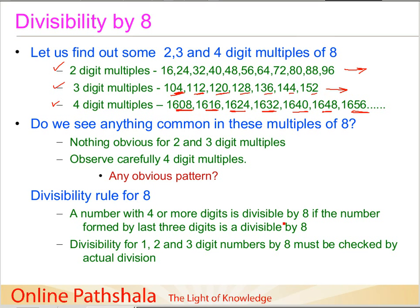This brings us to the divisibility rule for 8: a number with four or more digits is divisible by 8 if the number formed by its last three digits is divisible by 8. For one-, two-, or three-digit numbers, we must perform actual division and check that the remainder is zero in order to confirm divisibility by 8.